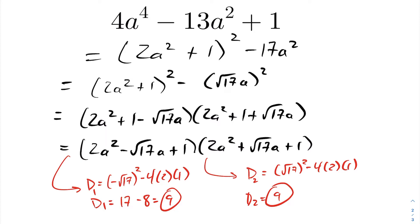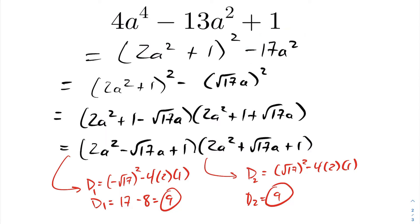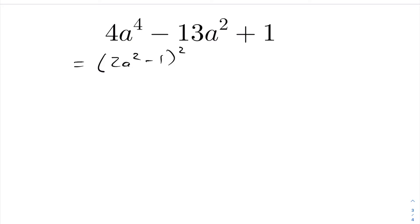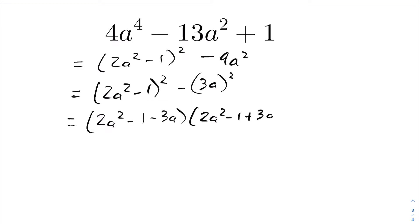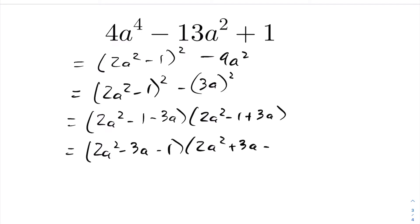Let's revisit this question with a minus sign inside: 2a squared minus 1, quantity squared. This time the cross term generates minus 4a squared. To go from minus 4 to minus 13, we only need to subtract 9a squared. We rewrite 9a squared as 3a, quantity squared, giving a difference of squares: 2a squared minus 1 minus 3a, times 2a squared minus 1 plus 3a. Rearranged: 2a squared minus 3a minus 1 and 2a squared plus 3a minus 1.